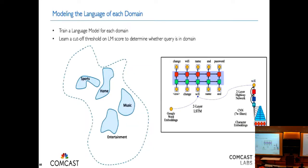The idea is to build a language model for every domain to capture the space of where queries lie, and make a decision based on that language model whether a query belongs to a domain. We built an LSTM-based model, exploring different kinds of word embeddings, to get a language model for this problem. A lot of the challenge is tuning that cutoff value, which required collecting a lot of manually annotated data.